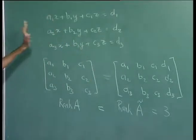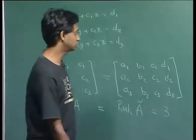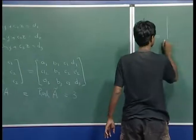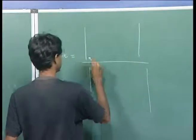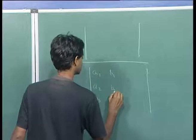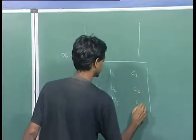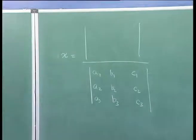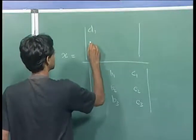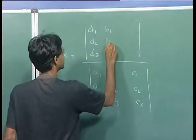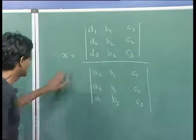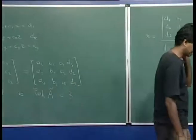If the rank of this matrix equals the rank of the augmented matrix and that equals 3, then this set of equations has a unique solution. You can show by simple algebraic manipulations that this solution is given by x equal to a ratio of determinants. The determinant at the bottom is always the matrix A1, A2, A3, B1, B2, B3, C1, C2, C3. To find x, you replace the column A1, A2, A3 by D1, D2, D3.